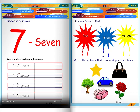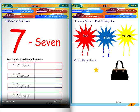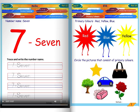Primary colors: red, yellow, blue. The three primary colors are red, blue, and yellow. Circle the pictures that consist of primary colors.